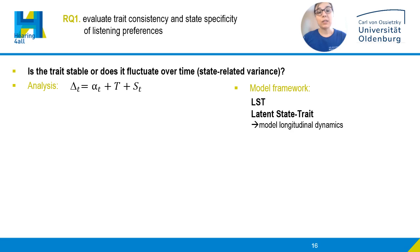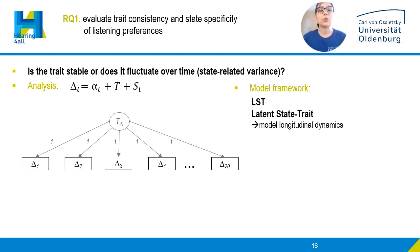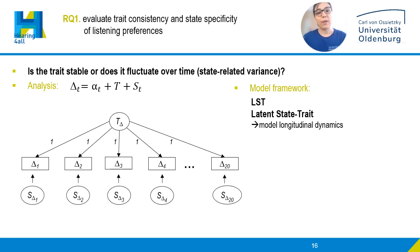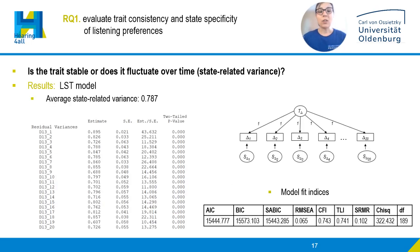According to latent state and trait theory, an observed variable can be decomposed into a latent trait variable — the attribute of a person, in our case habitual listening preferences — and a state residual variable, the attribute of a person in a situation, representing momentary fluctuations in preferences. Trait and state variables together constitute a person's true score. We implemented a latent state and trait model for our measure delta SNR across the 20 longitudinal time points, and found that average state-related variance amounts to 0.78. This indicates that almost 79% of the variance observed in individual listening preferences across the days is attributable to situational fluctuations.